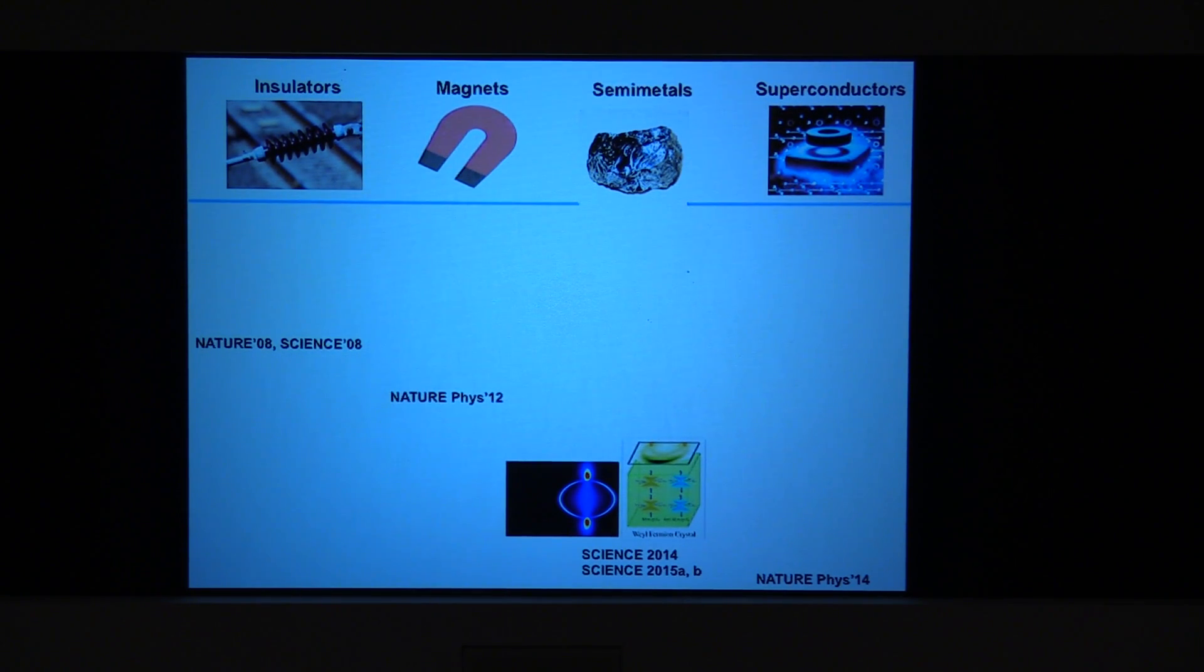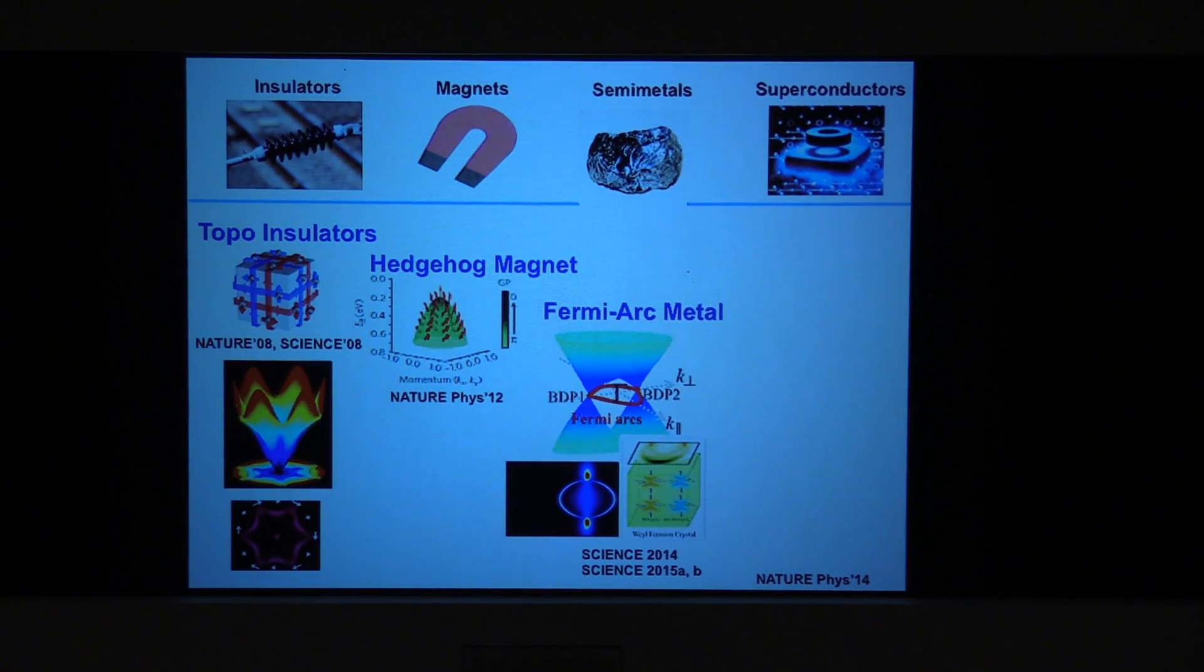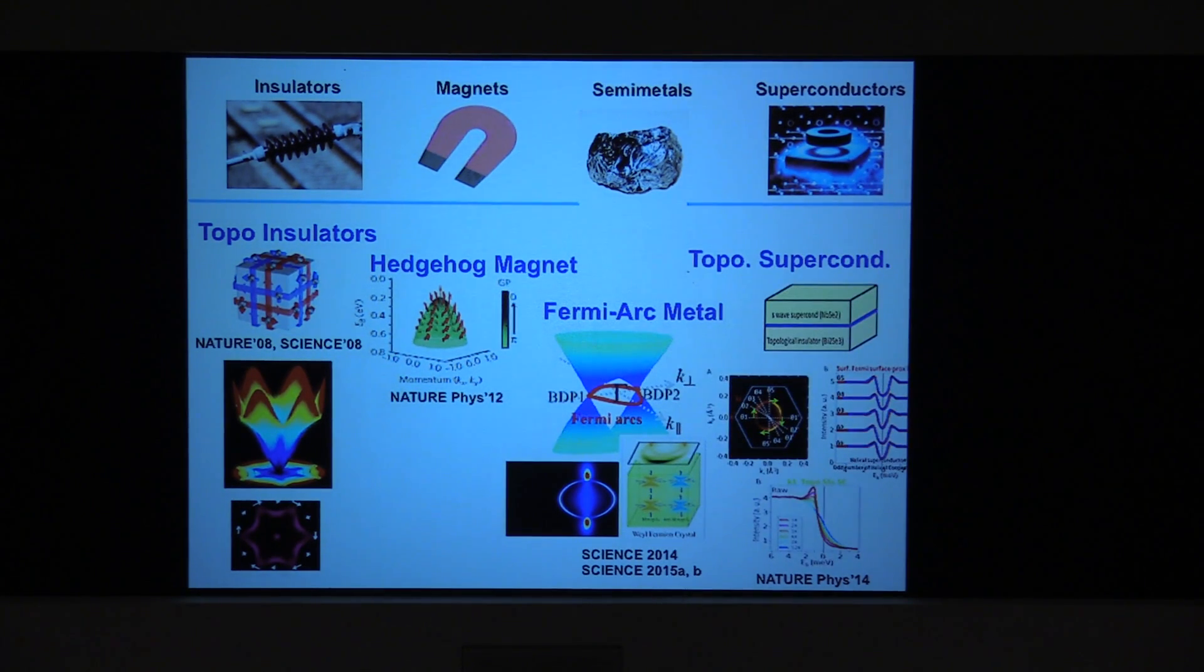In condensed matter physics, we have insulators, metals, magnets, superconductors, that is the Kittel's book, or Ashcroft-Mermin book. In last seven, eight years or so, what happened is that we have the topological counterpart of the insulator, we call it topological insulator. We can magnetize them. There is some topological effects in magnet as well. Metals, as I said, there are Fermi arc 2D metals. They're like fractional Fermi surface with bulk Weyl Fermi arcs. In superconductors, you have helical Cooper pairing.